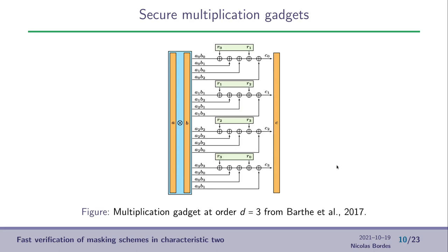Here is another multiplication gadget, but this time secure at order D equals 3. It's three private from Barthe et al. in 2017. And as before, we are doing first the tensor product, and then we use additional random masks. Here, there are four random masks, R0 to R3, to secure the gadget. We see that the complexity of such circuit is increasing quite logically in D, the order of the masking.